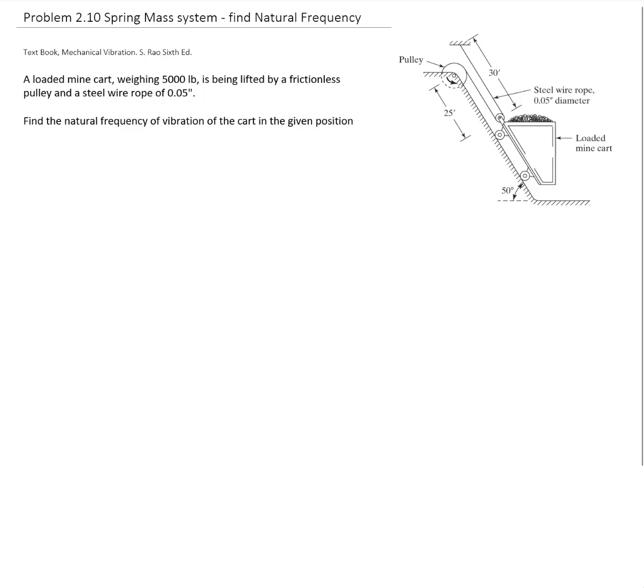The first thing we do is look up the properties of steel in the chart. We find the Young's modulus is 30 times 10 to the 6 pounds per square inch.